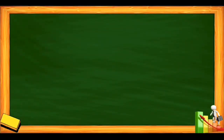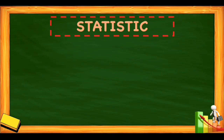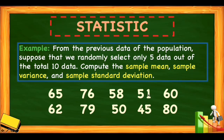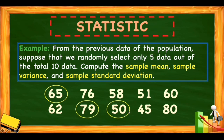Next, we will solve for the statistics. From the previous population data, suppose that we randomly select only 5 data out of the total 10. We need to compute the sample mean, sample variance, and sample standard deviation. The 5 randomly selected values are: 65, 79, 50, 45, and 60.